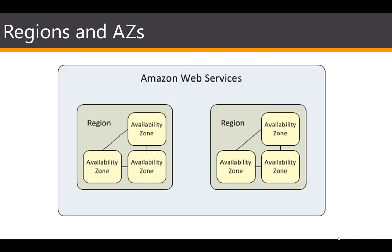Another core concept of EC2 infrastructure is availability zones and regions. EC2s are hosted in multiple locations worldwide, composed of regions and availability zones. A region is basically a geographic area, and within a region you have availability zones — essentially data centers. Each region has at minimum two availability zones or physical data centers for high availability and redundancy. Each region is completely independent, each availability zone is isolated, but availability zones within a region are connected through low-latency links, as shown in the diagram.